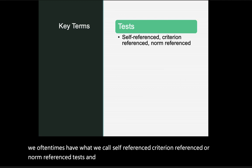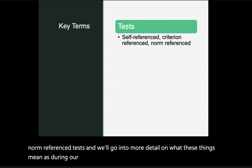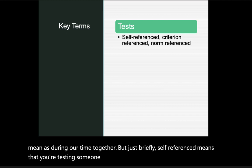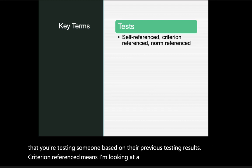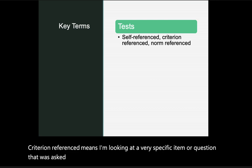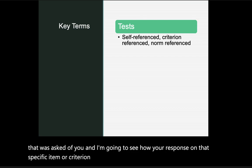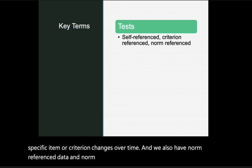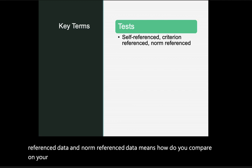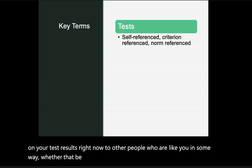Self-referenced means you're testing someone based on their previous testing results. Criterion-referenced means looking at a specific item or question and seeing how a response on that criterion changes over time. Norm-referenced data means comparing test results to other people who are similar in some way — whether by sex assigned at birth, occupation, or age.